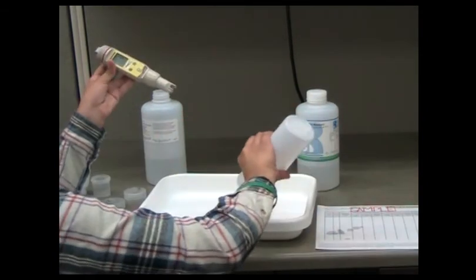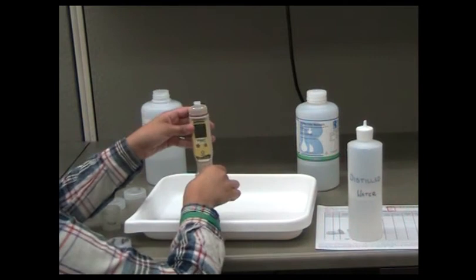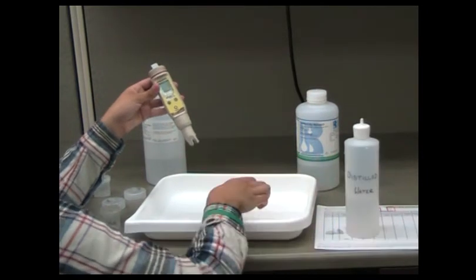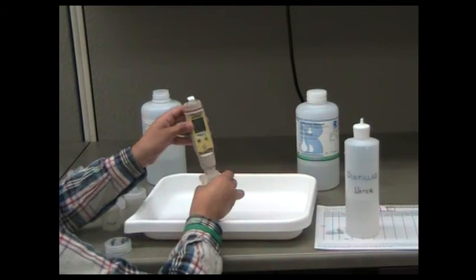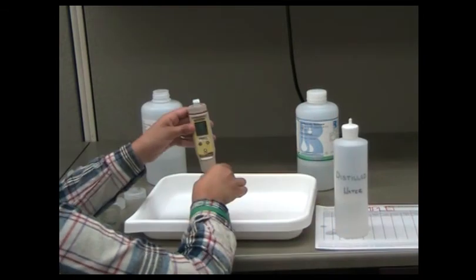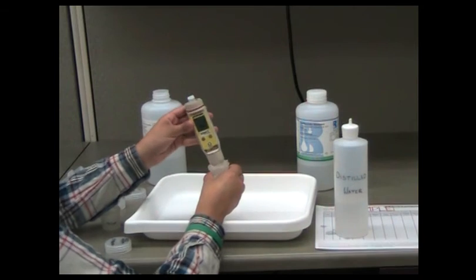Rinse the probe liberally with distilled water over the waste tray. Rinse the probe three more times with distilled water in the 30-milliliter Nalgene jar marked DIW. Pour out the distilled water into the waste tray between each rinse.